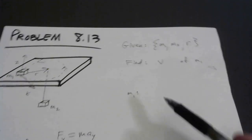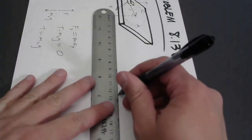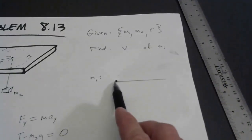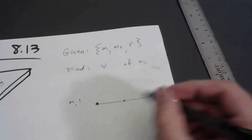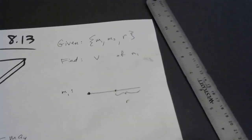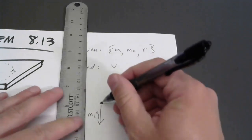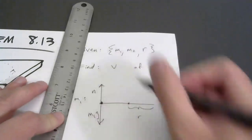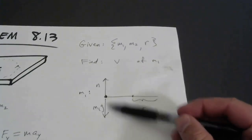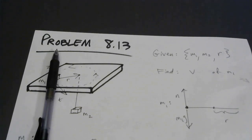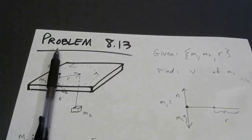Looking at an edge-on view of the circle, this dot represents mass one moving in a circle; the center is here and r is the radius. I see gravity pulling down on mass one and the table pushing up — I made those equal in length because there's no reason mass one should have an acceleration along the z-direction. For this class, every circular motion problem involves zero acceleration along the z-axis. If you were accelerating along z, your trajectory would be more complicated than a circle.